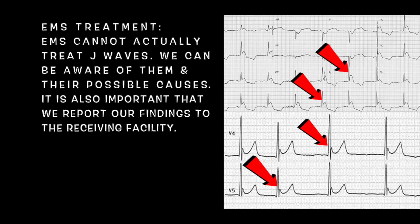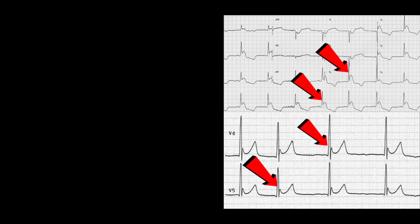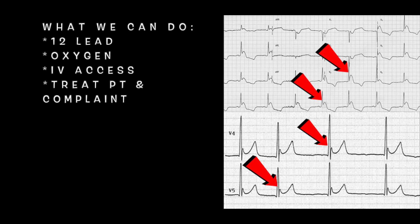So what do we as EMS providers in the 911 EMS setting do to treat J waves? EMS cannot actually treat J waves. We can be aware of them and their possible causes and report our findings to the receiving facility. Some of the things we can do in the back of the ambulance are a 12-lead, oxygen, IV access, and we always want to treat our patient and their complaint. So if we have a feeling that this wave is coming from hypothermia, the obvious thing to do would be to warm our patient up — that's really the only thing we can do to treat J waves if we even notice them on the 12-lead, which I hope we do, especially after watching this video.